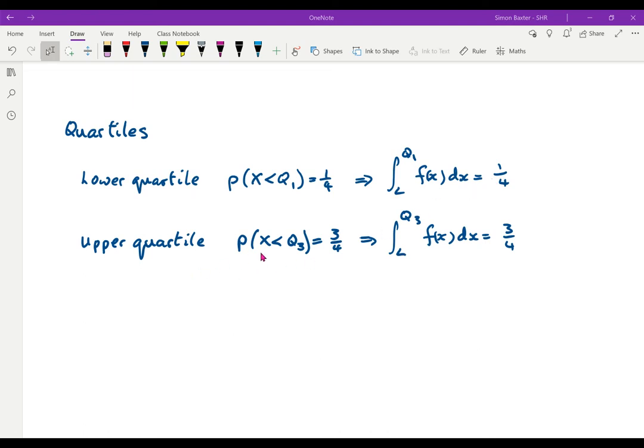Upper quartile: the probability that we are less than the upper quartile must be three quarters. From the lowest value up to Q₃ must give us three quarters.